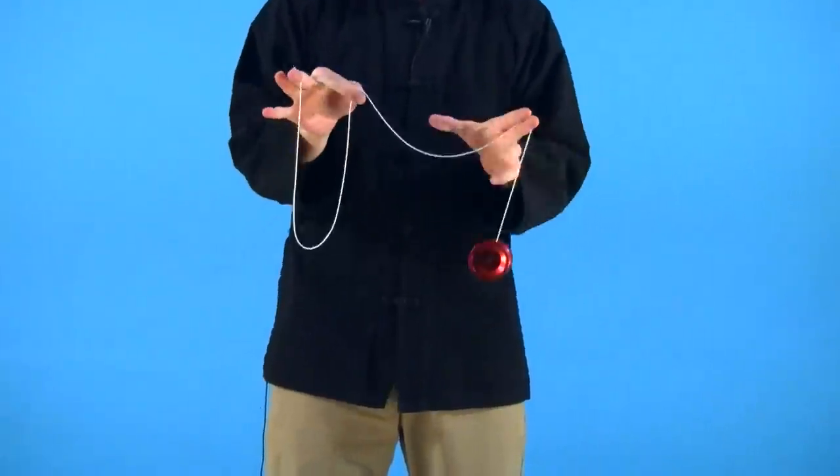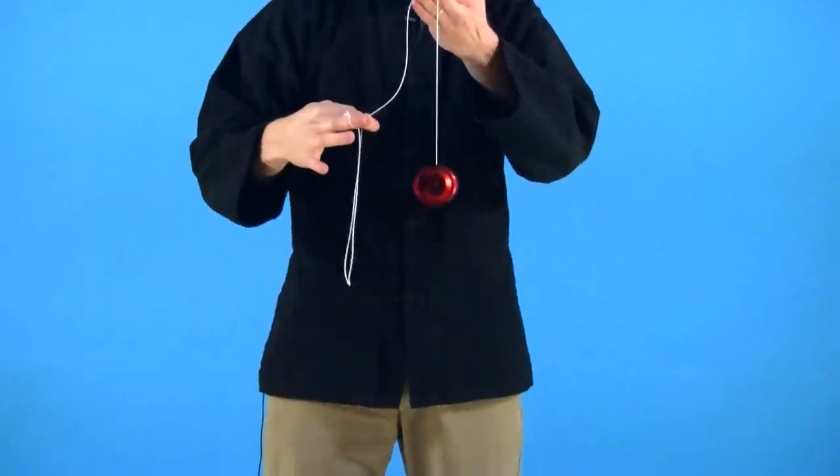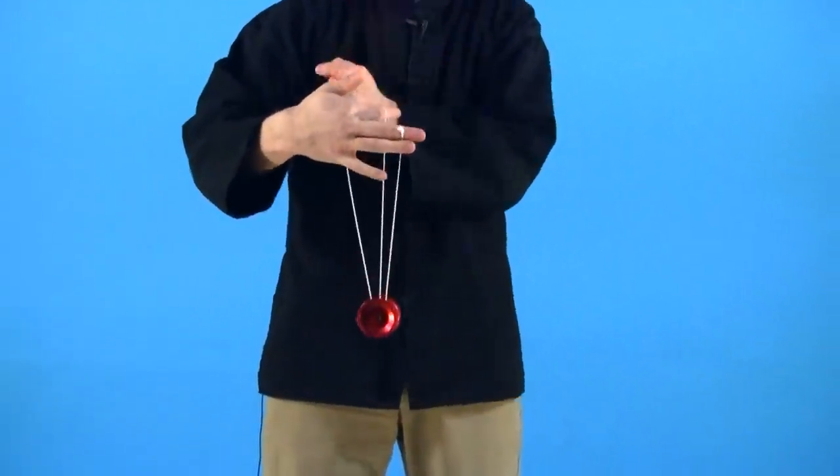And you're basically just going to aim the yoyo into this back string here. So you just aim it in there, place it on, and drop it.